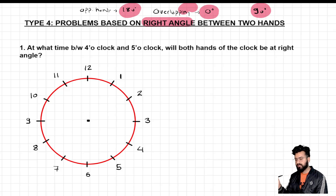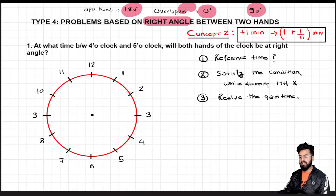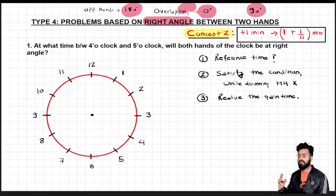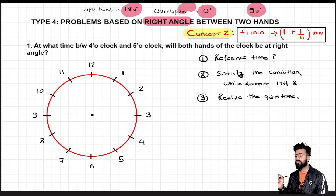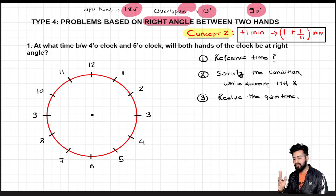There would be two situations when the minute hand and hour hand are at right angles. As far as the working approach is concerned, we are going to use the same Concept 2: to make a gain of one minute, the minute hand takes 1 plus 1/11 minutes. Nothing new is used here. But what has changed is that in a right-angle problem, I have to find two positions of the minute hand when the angle between the two hands is 90 degrees.